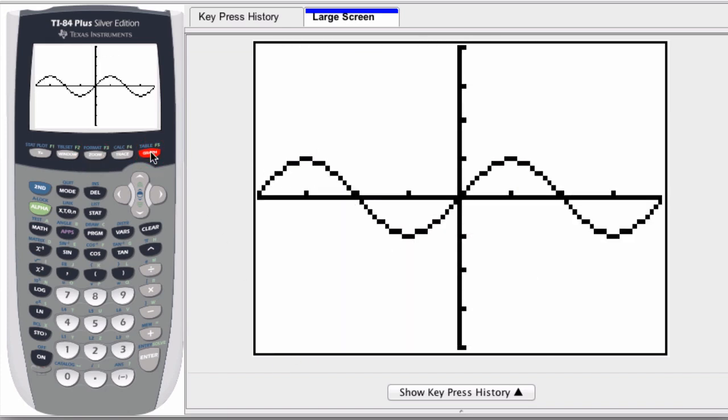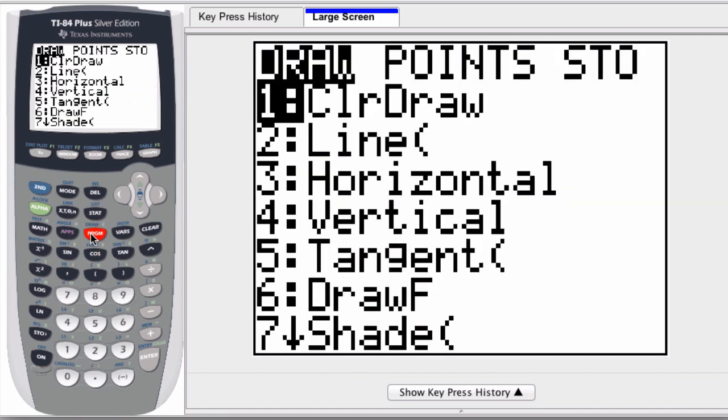But in the graph, you can quickly enter or plot a tangent line by selecting second and then program, this button right here. You can see the little blue draw button up there, and there are lots of options.